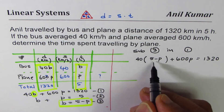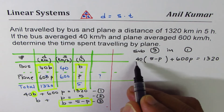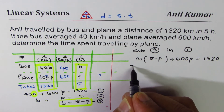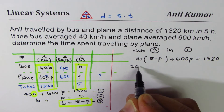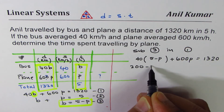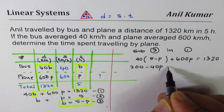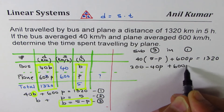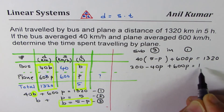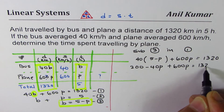Using the distributive property: 40 times 5 is 200, so we get 200 minus 40P plus 600P equals 1320.